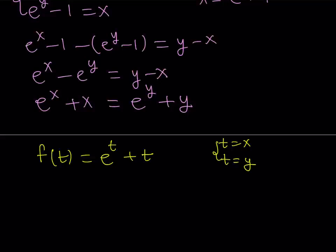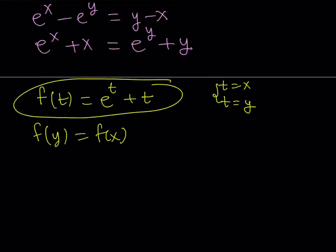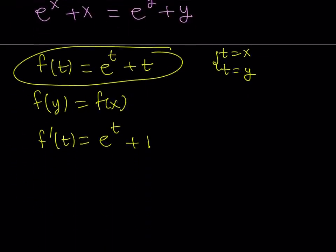Now what happens if we do that? We basically get the equation f of y equals f of x. Now what does that imply? Well, first of all, let's take a look at our function here, which is given by this equation. And let's see if that's going to be a one-to-one function or not. So I'm going to differentiate this function. And when I differentiate it, it's going to be e to the power t plus 1 because the derivative of e to the power t is itself. And the derivative of t with respect to t is 1. Now this shows always a positive value because e to the power t is always positive for all values of t in the domain. So our function has a positive derivative, which means that f of t is always increasing.